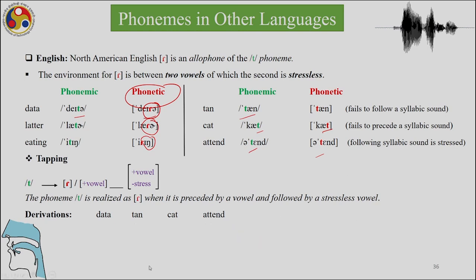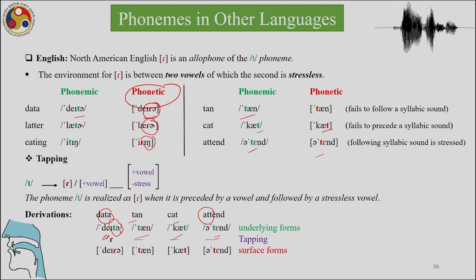Let us see the derivation. Where we have vowels between the 't' — word initially and word finally — this is our data set. Additional information about stress: this vowel is stressed but this vowel is not stressed, and all monosyllables are stressed. The following vowel is stressed in 'attend'. So 'data' and 'attend' are two different ways in which 't' can be pronounced because of the distribution of vowels and the stressless vowel. The tapping rule applies where 't' is flanked by vowels on both sides and there is no stress. We have 'data', 'tern', 'cat', and 'attend'.